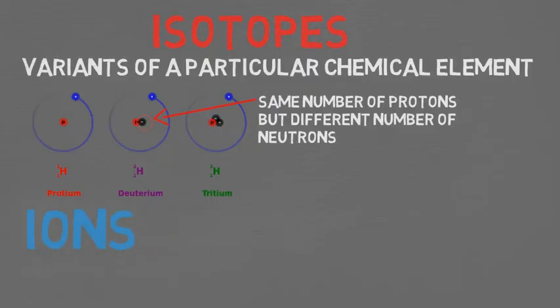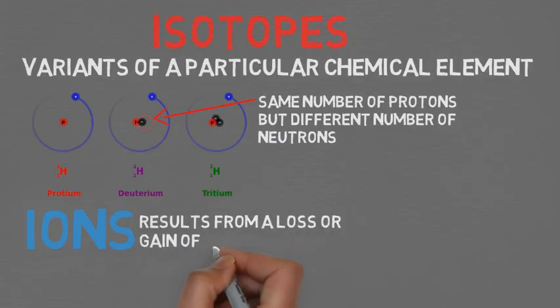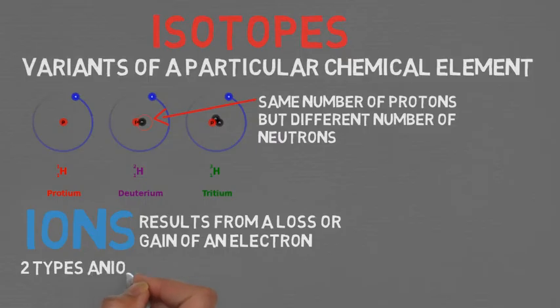Lastly on the agenda is an ion. An ion is a charged particle that typically results from a loss or gain of electrons. There are two types: anion, which is a negatively charged particle that gained an electron, and cation, which is a positively charged particle that lost an electron.